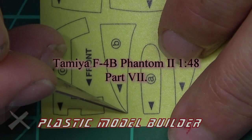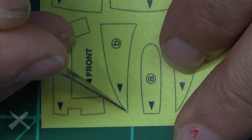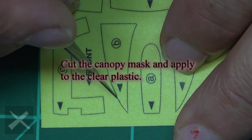Hello, Plastic Model Builders. It is I, your host, Ari. This is the Tommy F4B Phantom. This is part seven. Doing some masks right here for some painting.